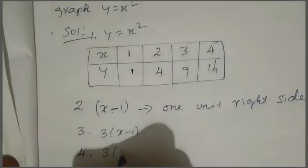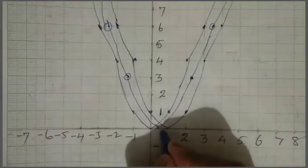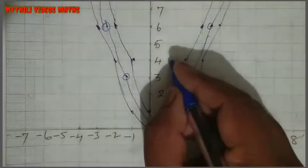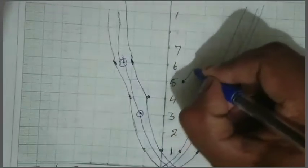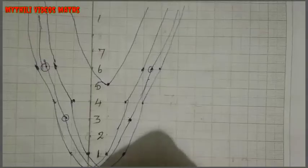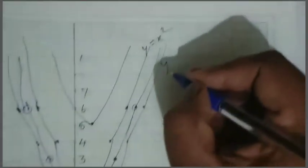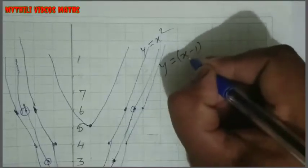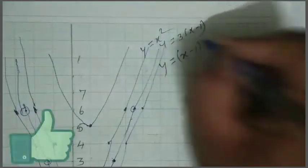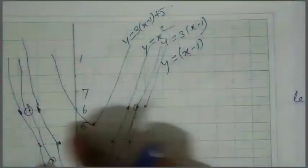The 4th step: y equal to 3 into x minus 1 whole square plus 5. Adding plus 5 means the graph shifts 5 units upward. We count 1, 2, 3, 4, 5 units up and draw the parabola at the new position. So step by step: y=x², then y=(x-1)², then y=3(x-1)², then y=3(x-1)²+5.